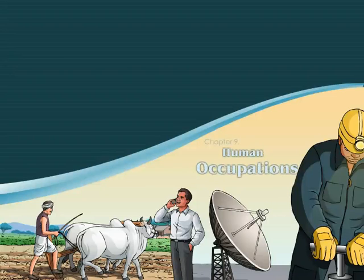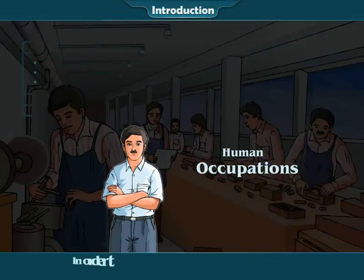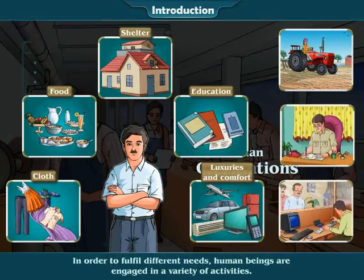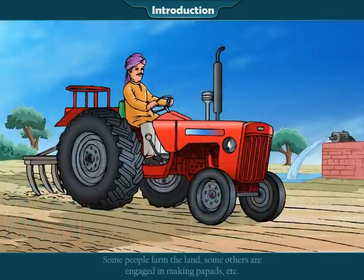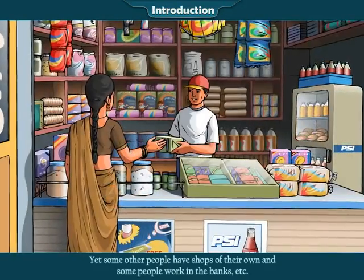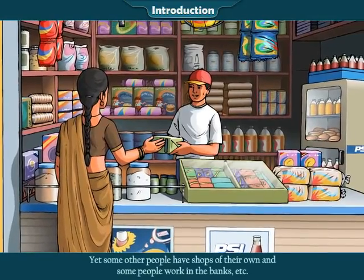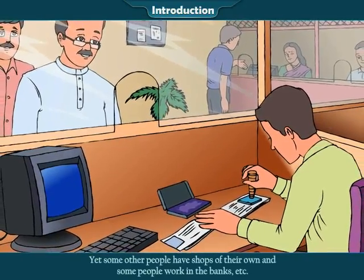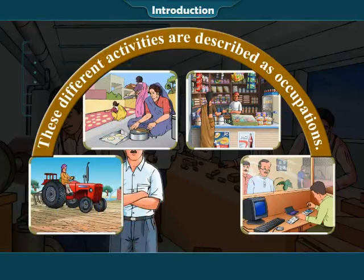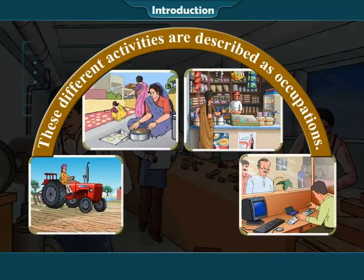Chapter 9: Human Occupations. Introduction. In order to fulfill different needs, human beings are engaged in a variety of activities. Some people farm the land, some others are engaged in making paper, yet some other people have shops of their own, and some people work in banks, etc. These different activities are described as occupations. Let us study these occupations in detail.